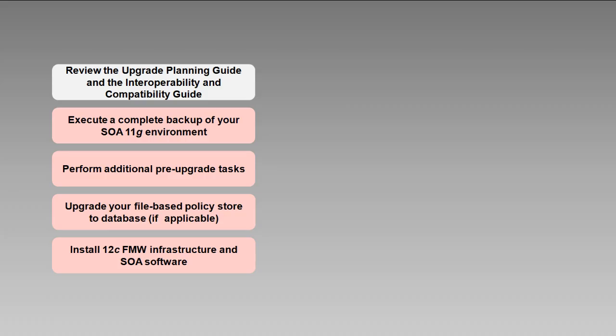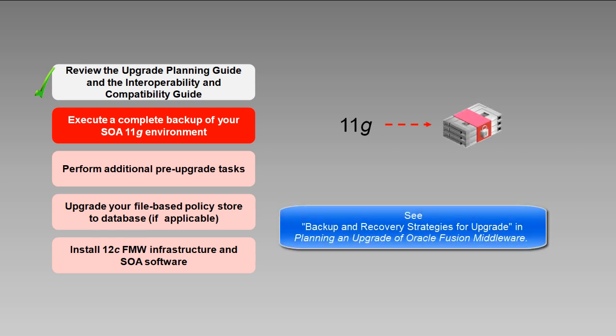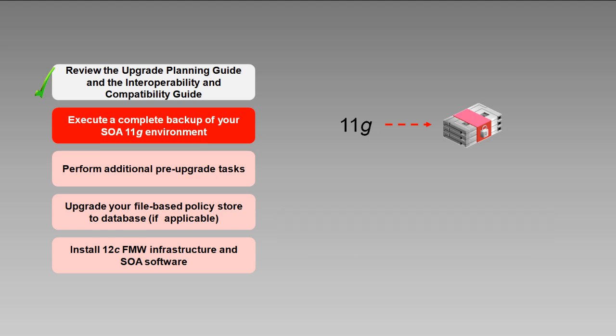After you've reviewed the documentation and verified that your environment meets the system, certification, compatibility, and interoperability requirements, the next task is to create a complete backup of your 11G environment, including the database. Remember that much of the upgrade occurs in place, making changes to your existing installation that can't be undone. So if anything goes wrong, you'll need a full backup to be able to restore your environment and try the upgrade again.